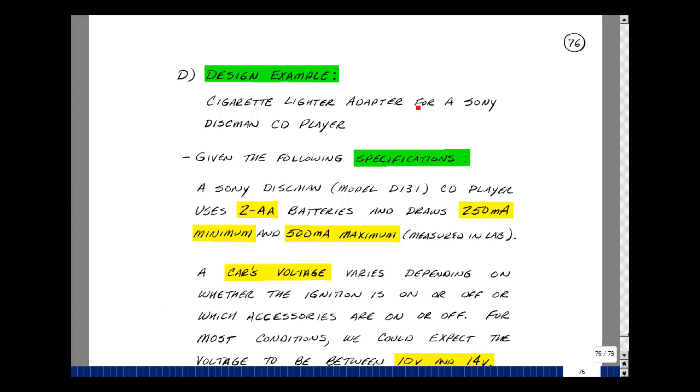This lesson deals with designing regulated power supplies. You can find these notes in the ECE 302 eBook in Chapter 2, starting on page 76.